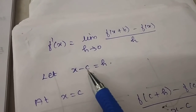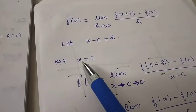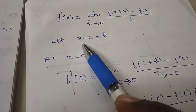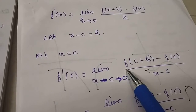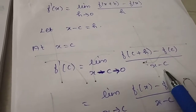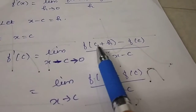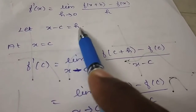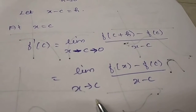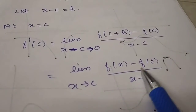Let us take a particular point c, and set h = x − c. Then at x = c, f'(c) equals the limit as (x−c)→0 of [f(c+h) − f(c)] / h. Since x−c→0 means x→c, and c+h = x, we can write: f'(c) = limit as x→c of [f(x) − f(c)] / (x − c).